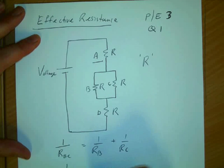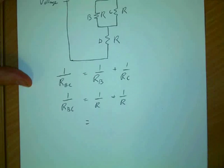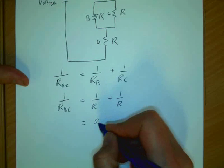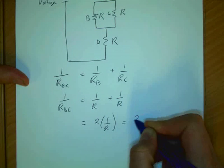So 1 over R_BC is going to be 1 over R plus 1 over R. And what do we have there? That's equal to 2 lots of 1 over R, which is equal to 2 over R.